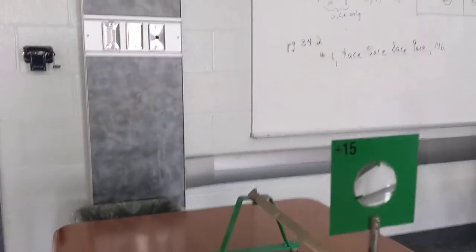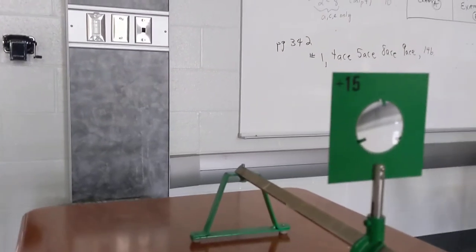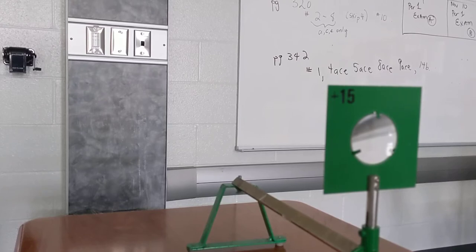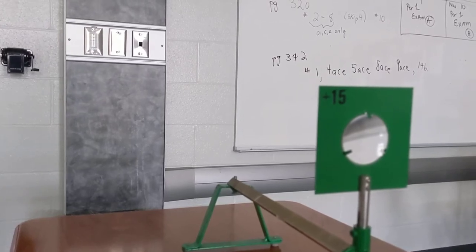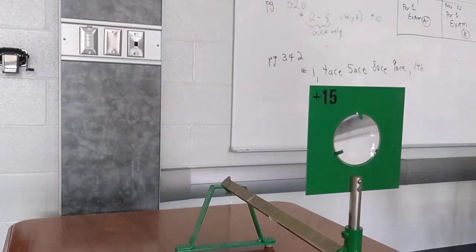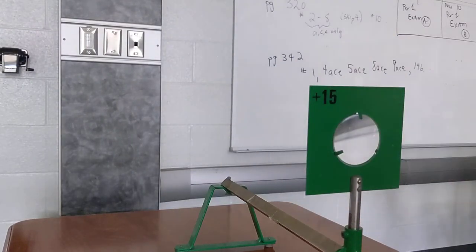Because a converging lens creates a real image, the image can be projected onto a screen. I will use my white piece of cardboard as my projecting screen.